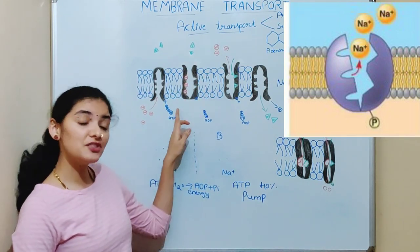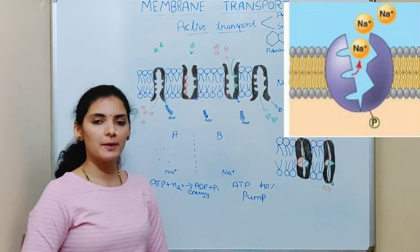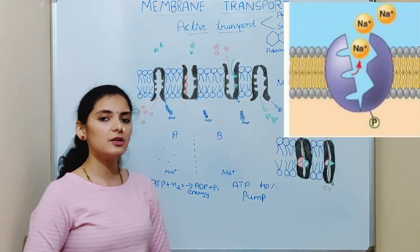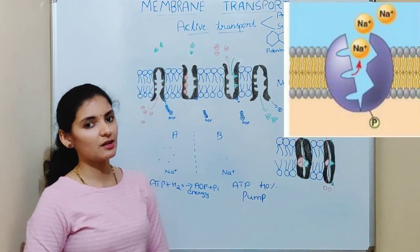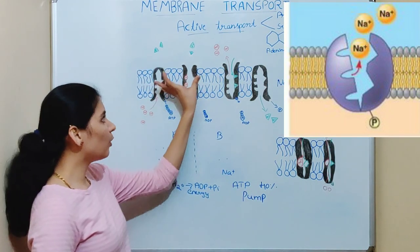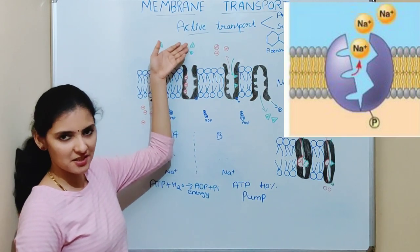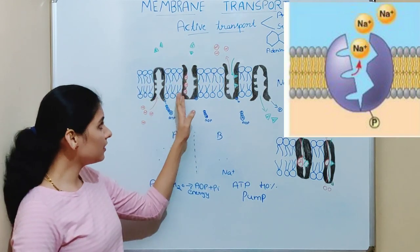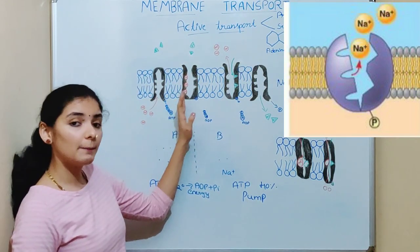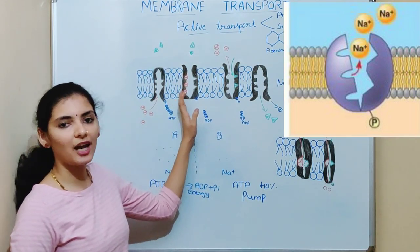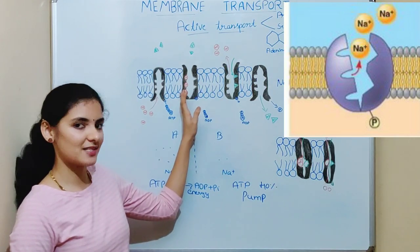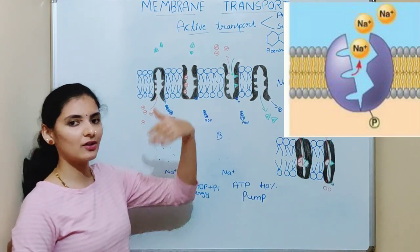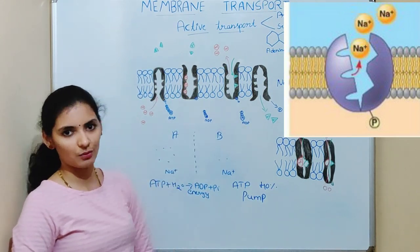As a result of phosphorylation, there is a change in the structure of the pump. The pump reorients itself and opens to the outside, or extracellular side. In this form, the pump does not have affinity for sodium, so the 3 sodium ions are released outside the cell.